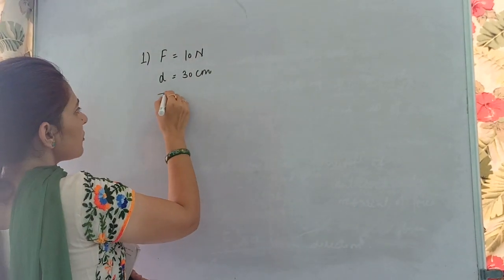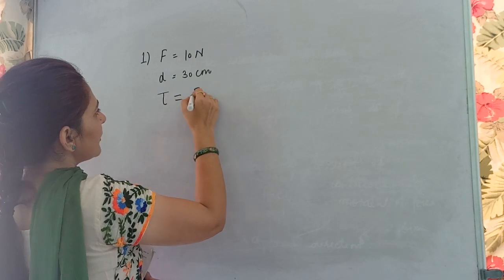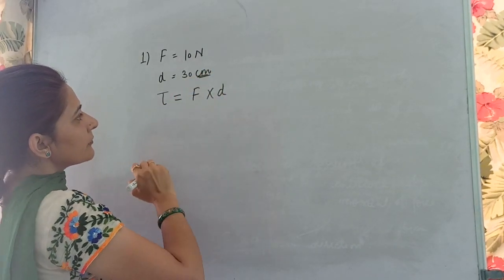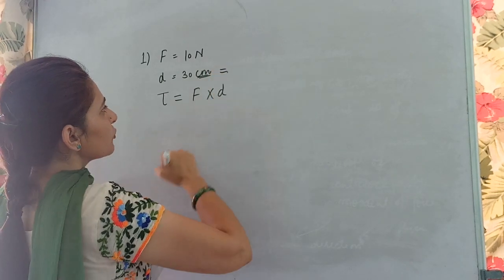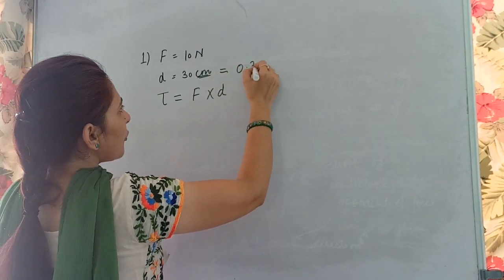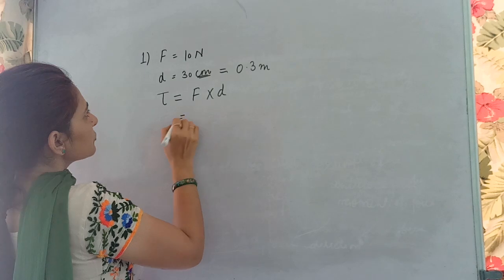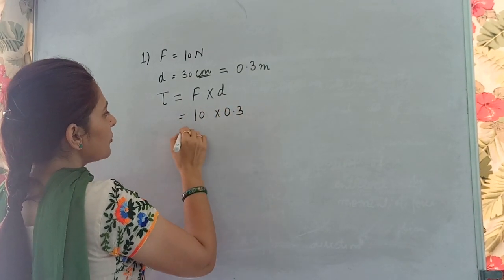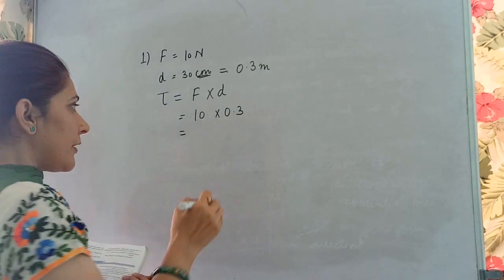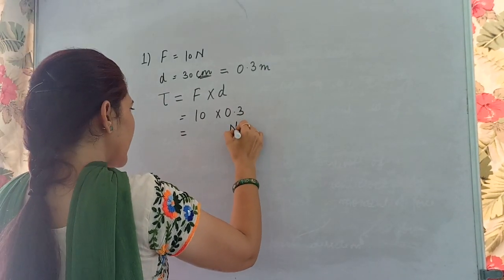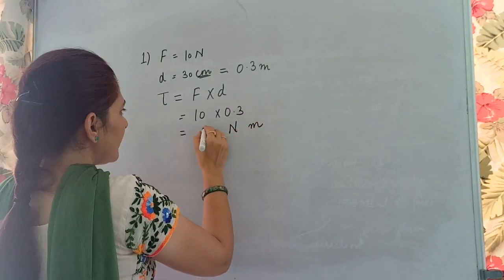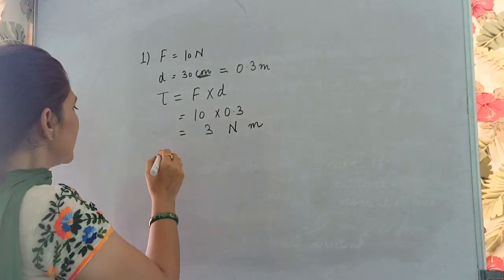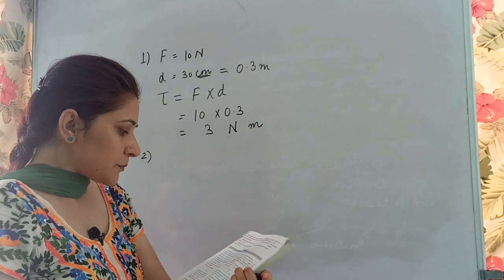The moment of force, or torque, is calculated as force into distance. The distance is given in centimeters, so convert it to meters: 30 cm = 0.3 m. Substituting the values: torque = 10 × 0.3 = 3 newton meters. That is your answer for the first numerical.